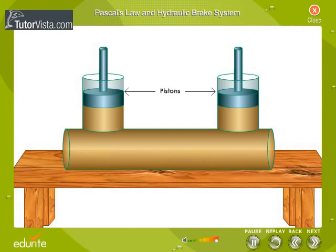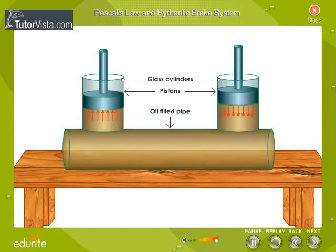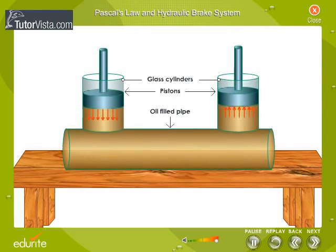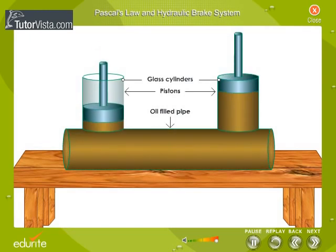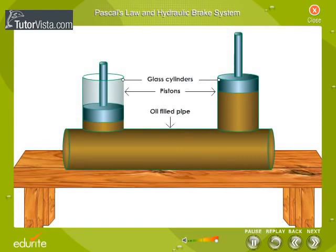Two pistons are fitted into two glass cylinders filled with oil and connected to one another with an oil-filled pipe. If you apply a downward force on one of the pistons, the force is transmitted to the second piston through the oil in the pipe. Since oil is incompressible, the efficiency is very good.